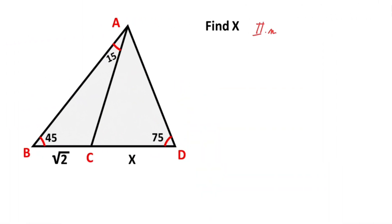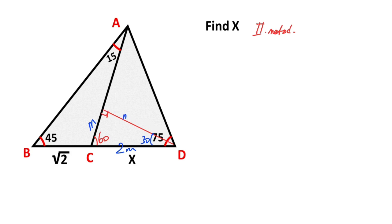Now we will calculate the value of x using the second method. We know that here is 60 degrees. Let's draw a perpendicular opposite the 60 degrees and call the hypotenuse 2m. If there is 2m opposite the hypotenuse, then opposite the 30 degrees must be equal to m units. And then here must be equal to m root 3. If there is m root 3 opposite the 45 degrees, then opposite the 90 degrees must be equal to m root 6.